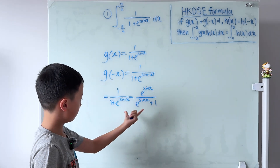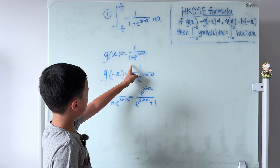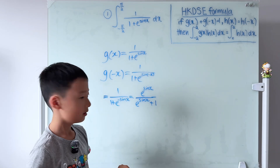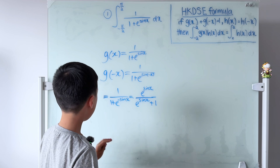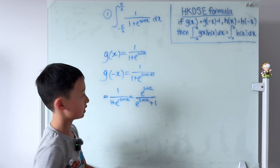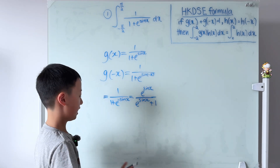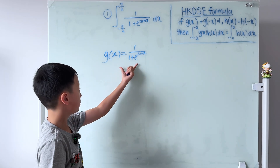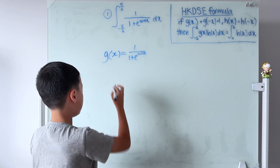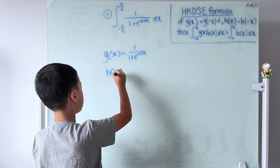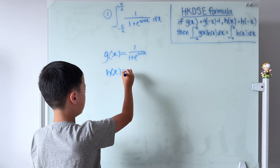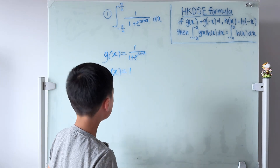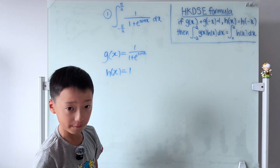g(−x) equals that expression, and g(x) equals 1/(1 + e^(sin x)). If we add them up, they equal 1, so our guess was correct. Since g(x) is the whole thing, that leaves h(x) being just 1.